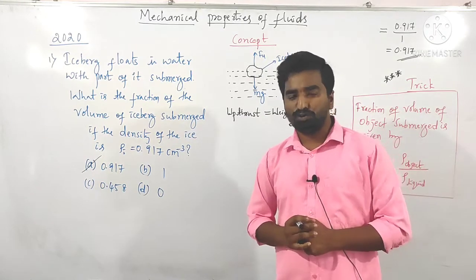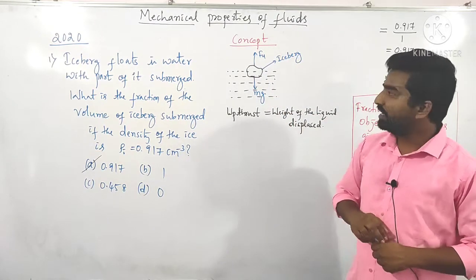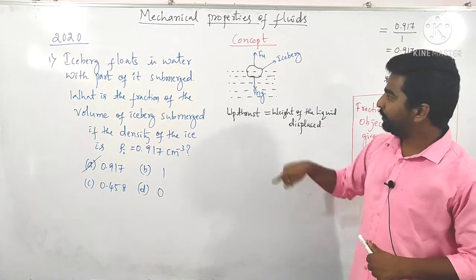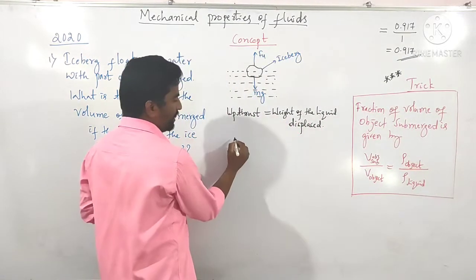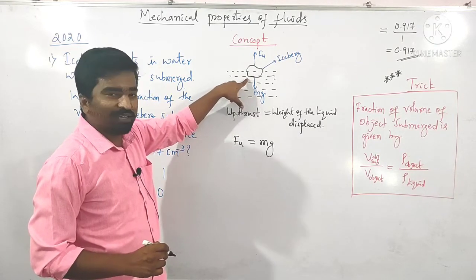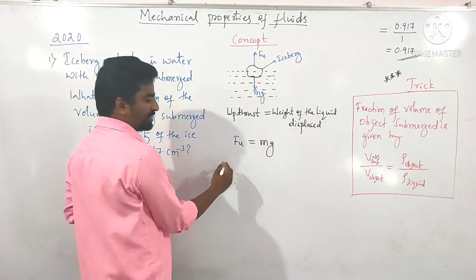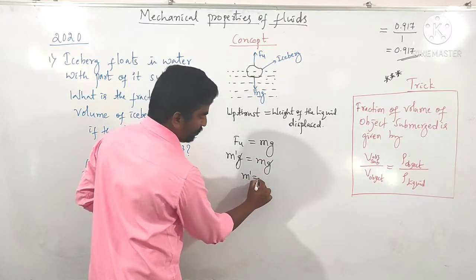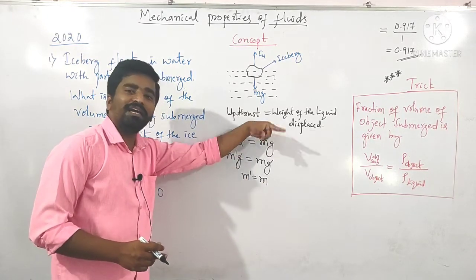The concept used here is Archimedes' principle: any object that floats, sinks, or is submerged in a liquid experiences an upthrust equal to the weight of the liquid displaced. At equilibrium, the upthrust is balanced by the weight of the object. The upthrust F_U equals the weight of the liquid displaced, that is m-dash into g. Here g gets cancelled out, so m-dash equals m, where m is the mass of the object and m-dash is the mass of the fluid displaced.